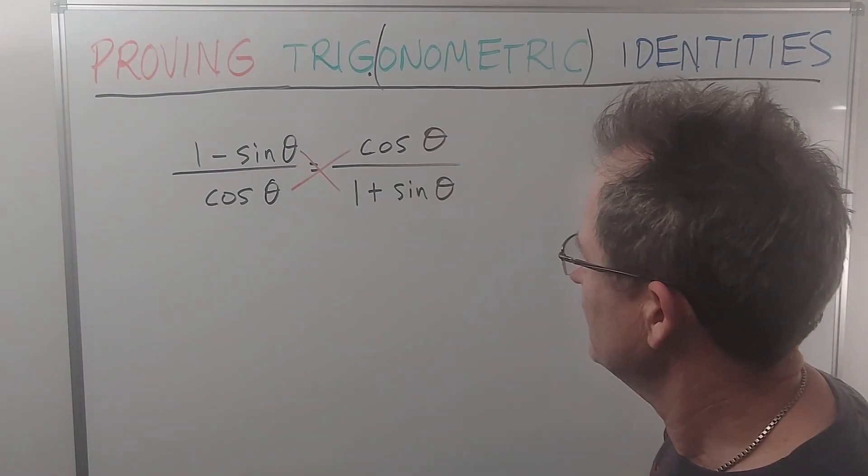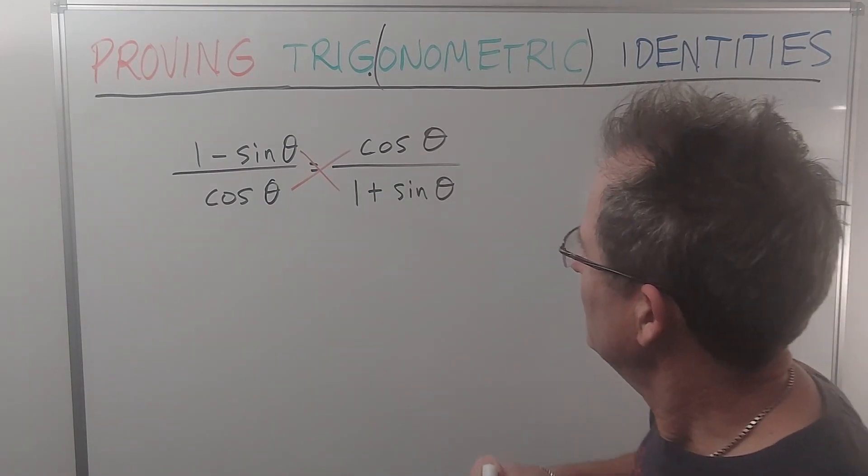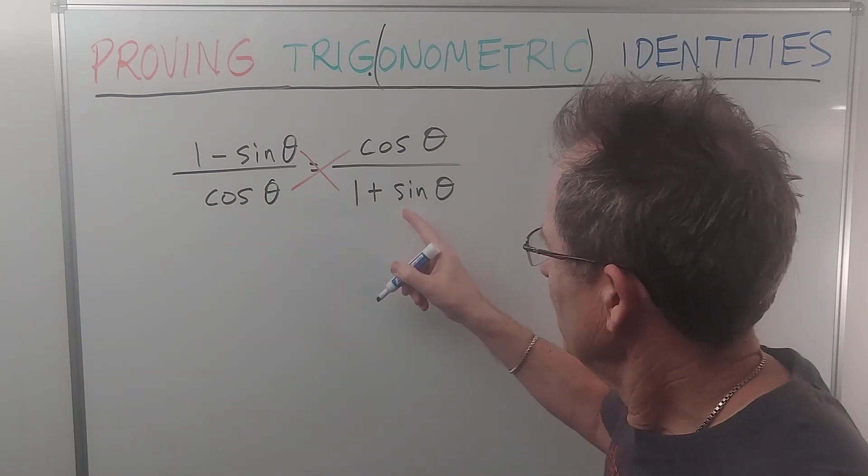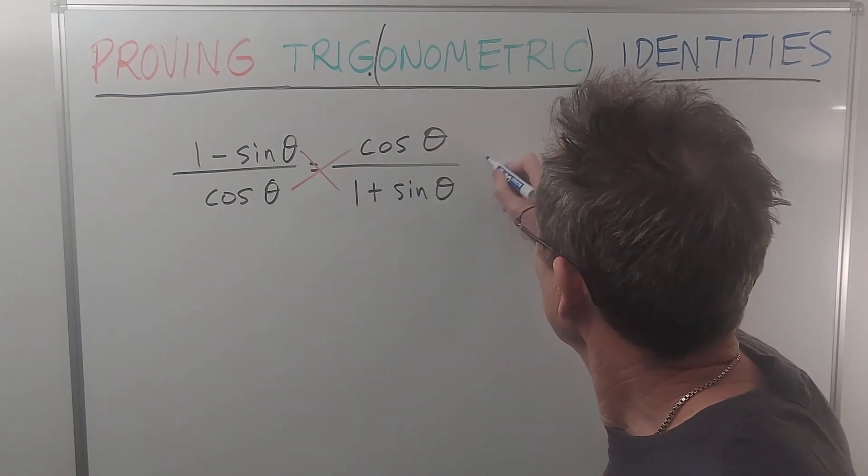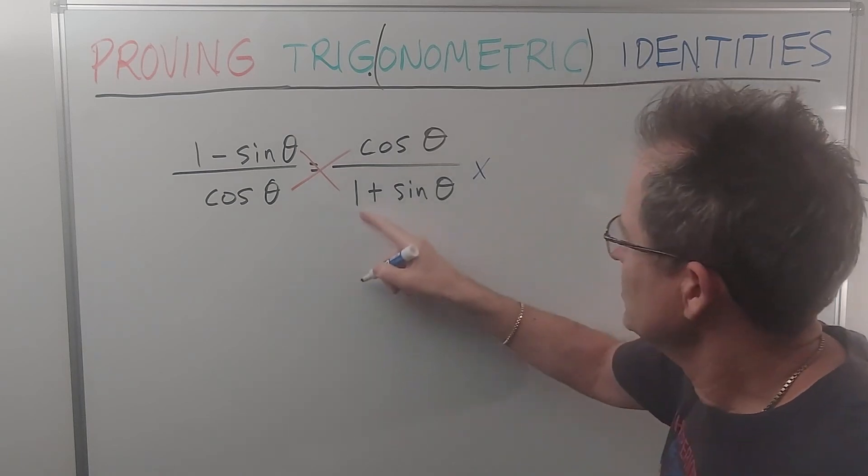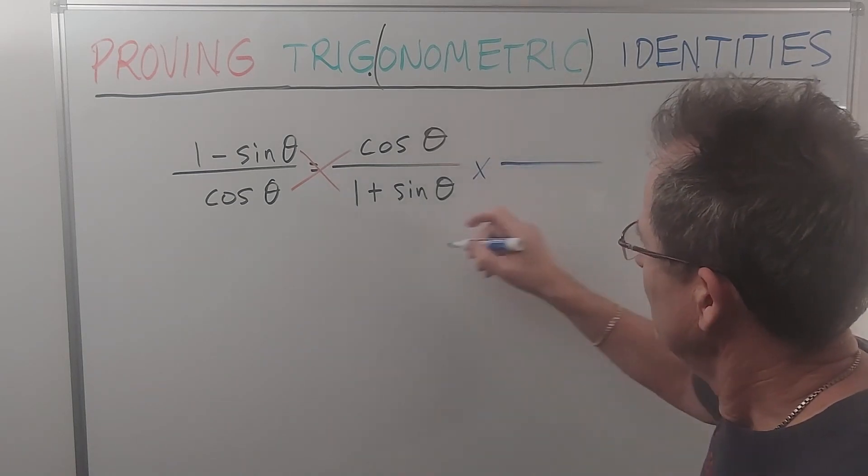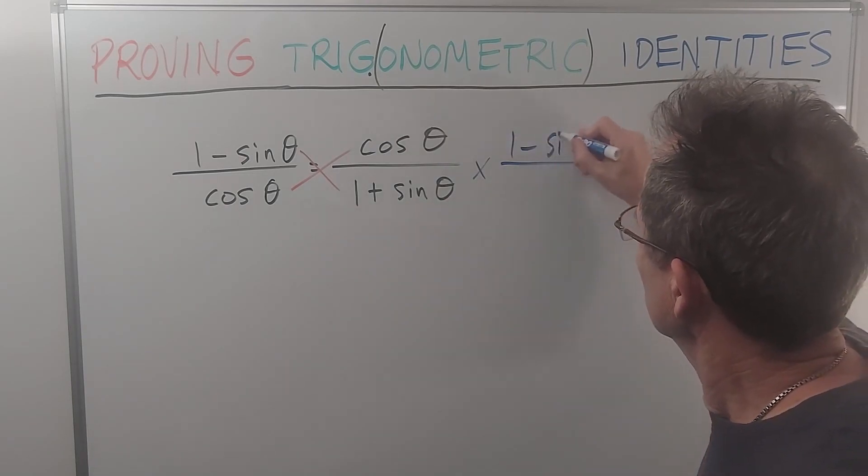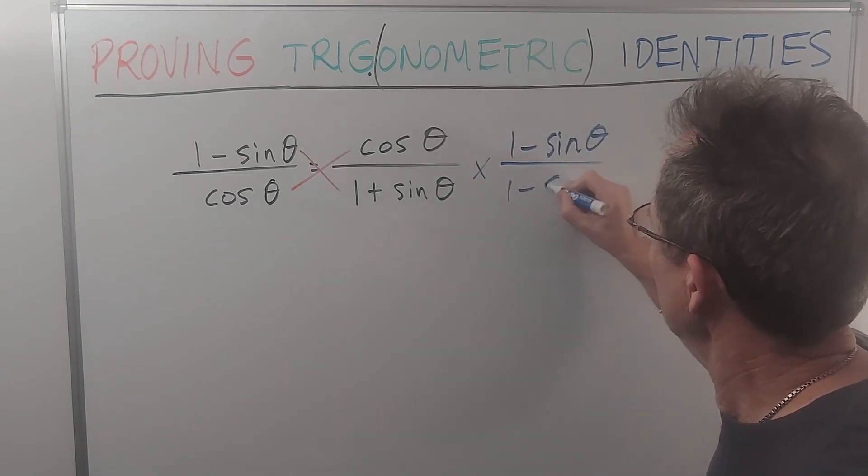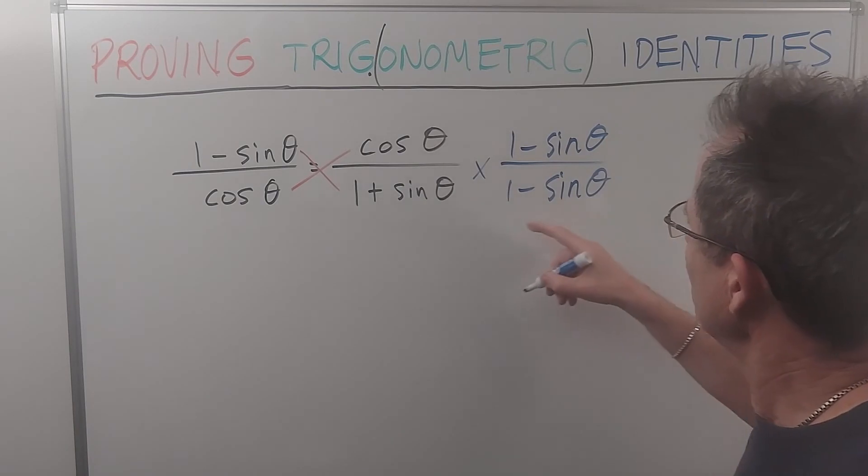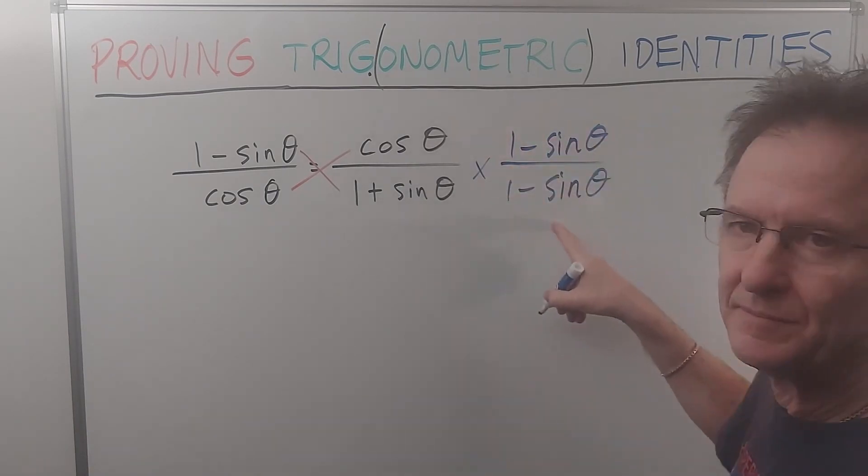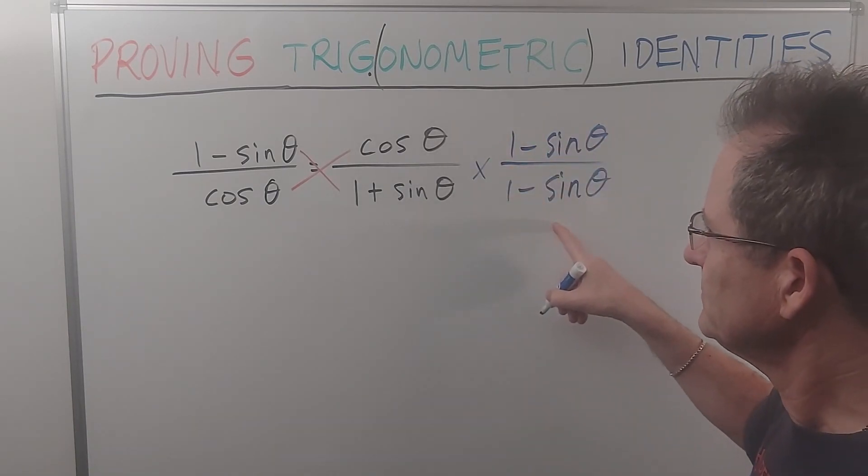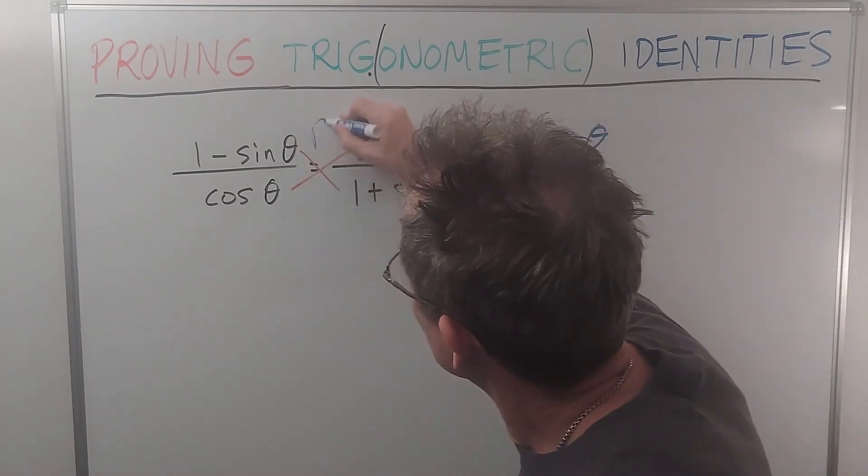Well, the trick is this. You multiply the right hand side in this case by what's called the conjugate of the denominator, which is 1 minus sine theta over the same thing. You can do that because this, of course, is equal to 1. So you're not changing anything. So this is the right hand side.